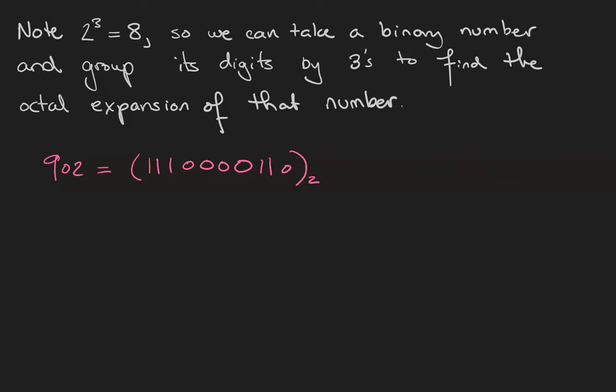Start grouping the digits by threes from the rightmost digit, so that's 1 1 0 as a group, 0 0 0 as a group, 1 1 0 as a group. Our last group seems to be short a couple of digits, but remember that we can always add zeros to the left-hand side of a number without actually changing anything.